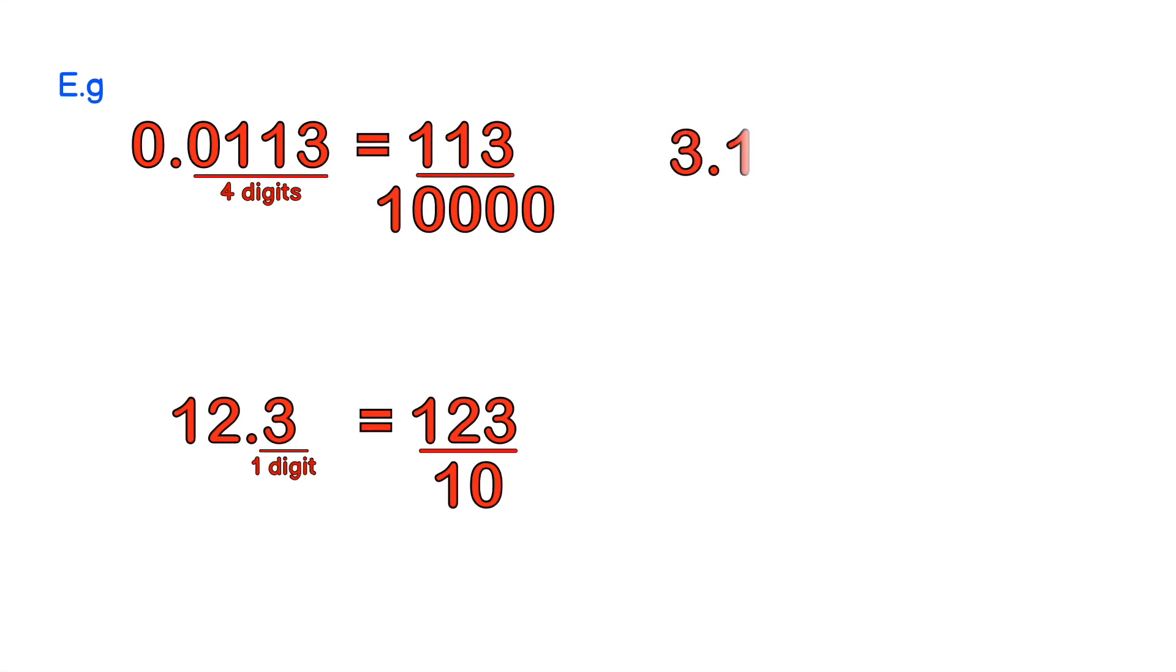Another example, 3.142. We notice there are three digits after the decimal point. So we know we have to divide by 1000. Removing the decimal, we have 3142 over 1000.